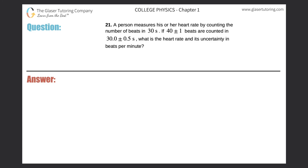Number 21: a person measures his or her heart rate by counting the number of beats in 30 seconds. If 40 plus or minus 1 beats are counted in 30 plus or minus 0.5 seconds, what is the heart rate and its uncertainty in beats per minute? This question is a little complex, so let's try to unpack it.